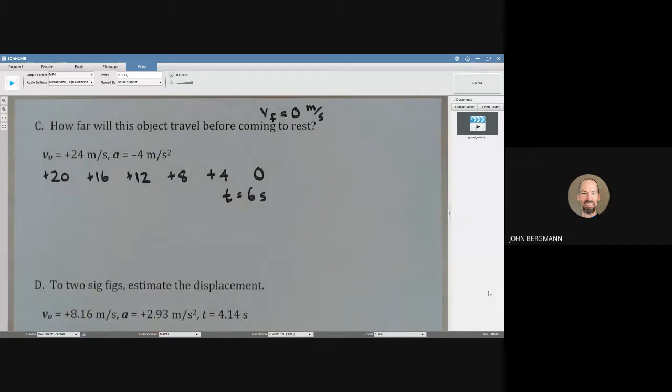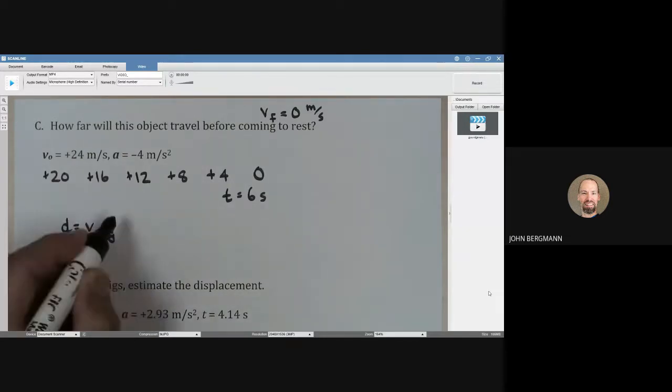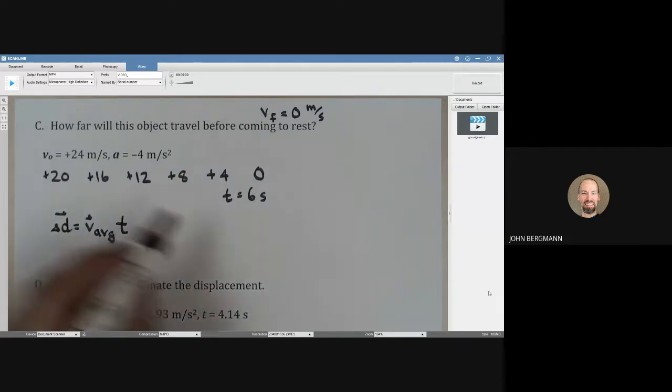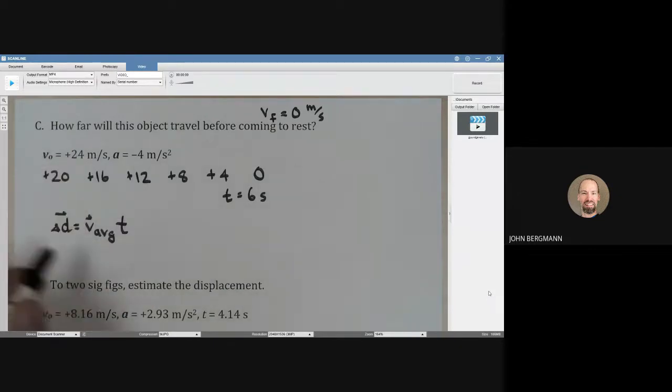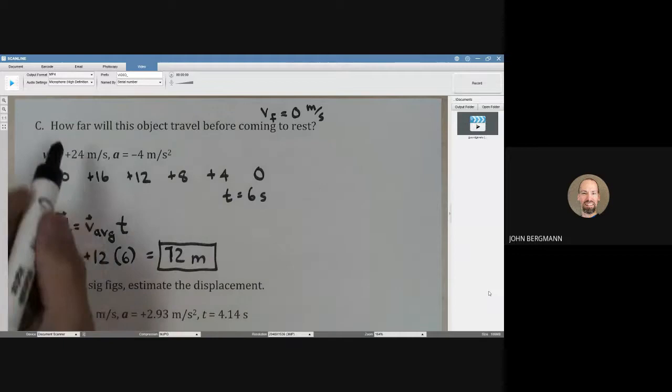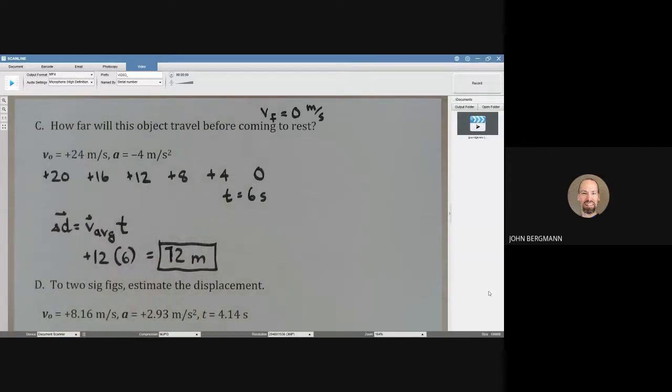Now that's not the question. The question is how far will it go. Distance is average speed multiplied by time, or displacement is average velocity times time. What's the average velocity? Well, it started at 24 and ended at zero, so the average is 12. And it did that for six seconds. So this object will travel 72 meters. We don't need to put a plus sign here because it just says how far, which indicates a distance.